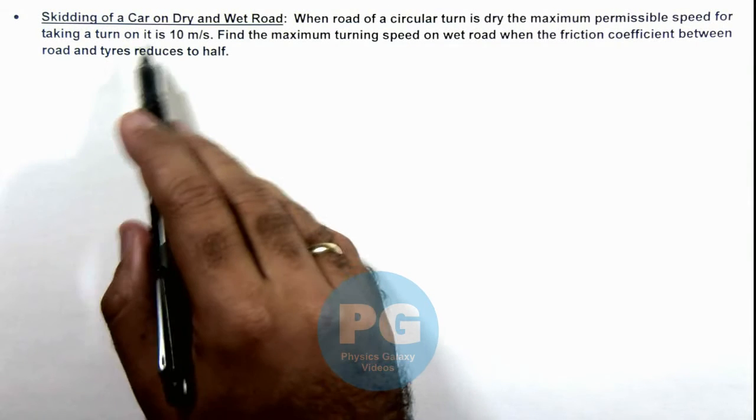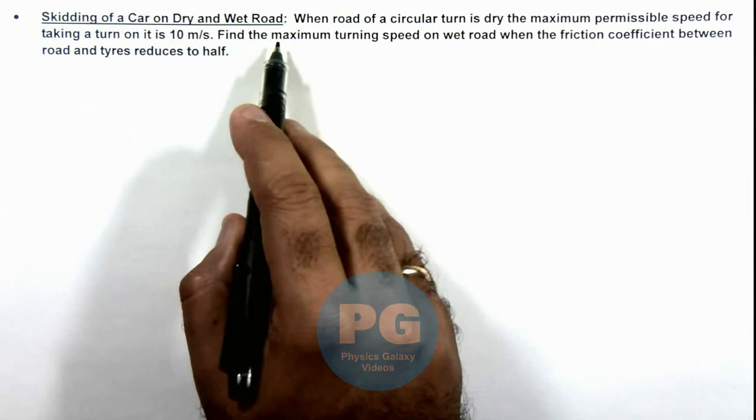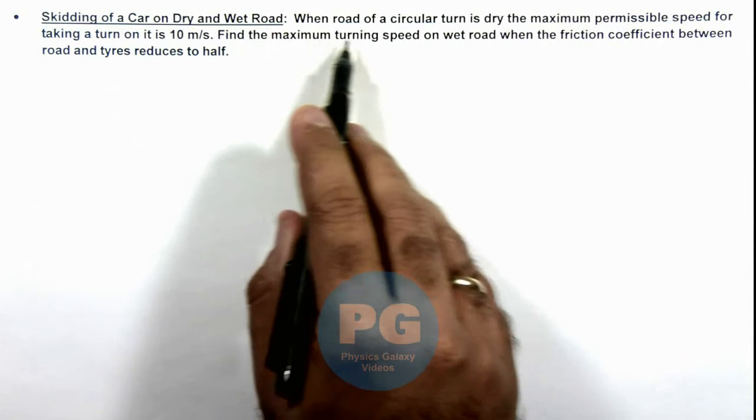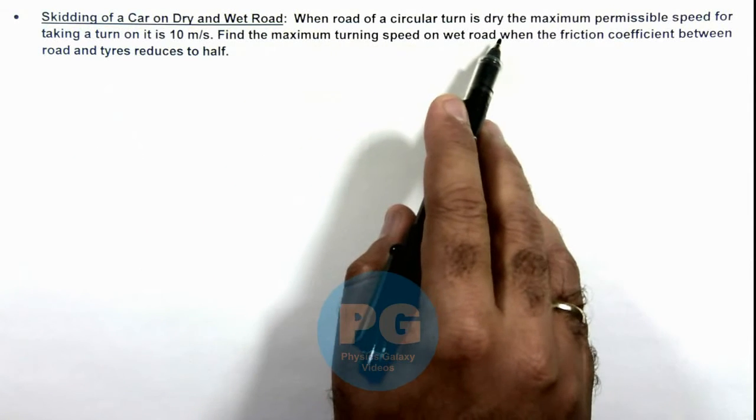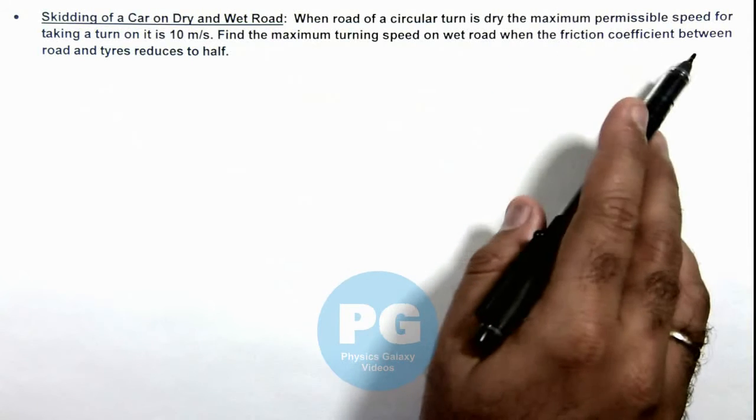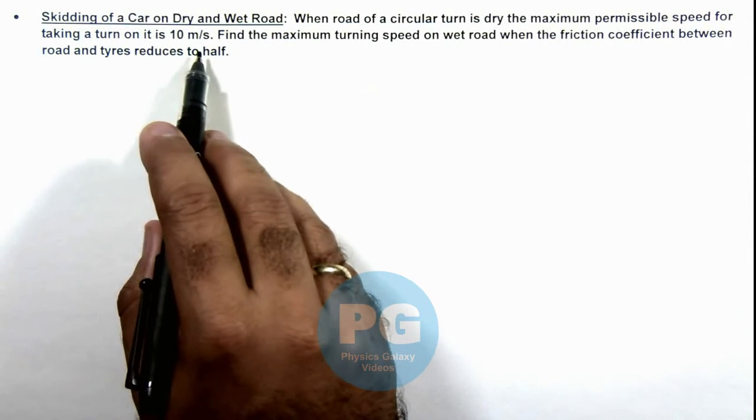In this illustration, we'll discuss skidding of a car on dry and wet road. We are given that when the road of a circular turn is dry, the maximum permissible speed for taking a turn on it is 10 meters per second.